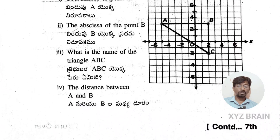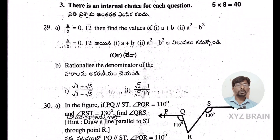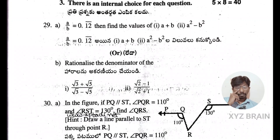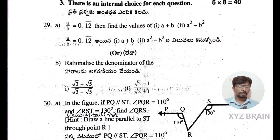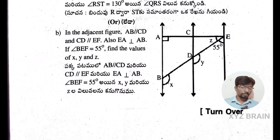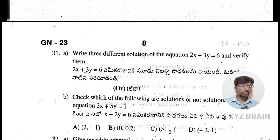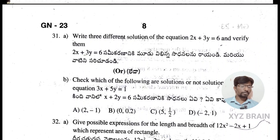Section 4: each question carries 8 marks, totaling 40 marks, with internal choices. Question 31: write three different solutions of the equation 2x + 3y = 6 and verify them. Also, check which of the following are solutions or not of the equation 3x + y = 0.